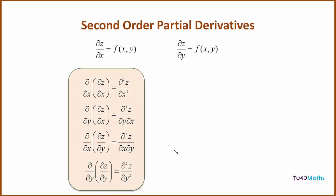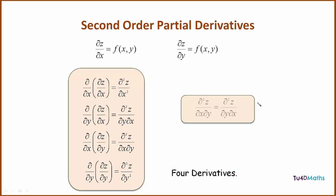So as you can see there are four second-order derivatives from a function containing two variables x and y. It can also be shown that the values of d²z/dx·dy are the same as the values of d²z/dy·dx for all functions which are continuous.